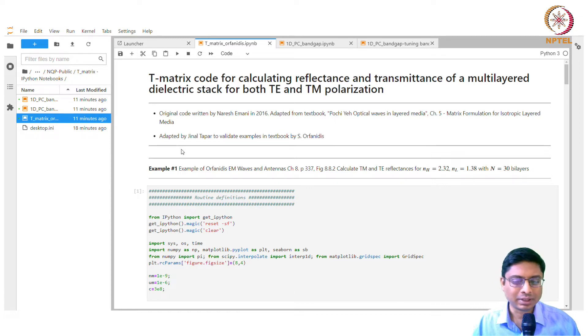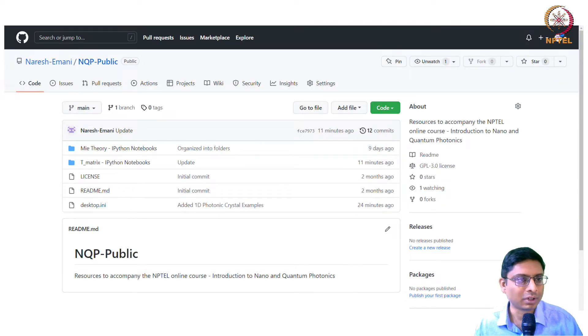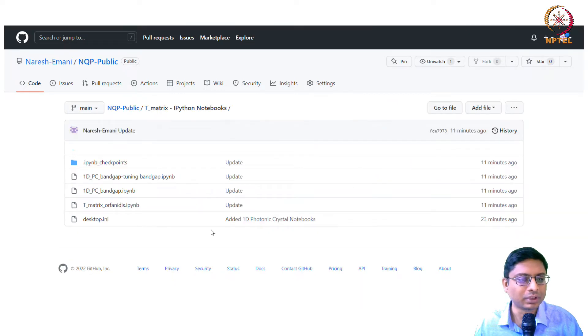I have published code on GitHub. For example, if you go to github.com and look for my name Nareshimani, then NQP public. This is a public repository we have for this course. If you look at the folder T-matrix hyperstack notebooks, we have published several notebooks here, three of them to be precise.